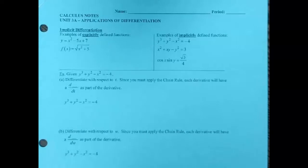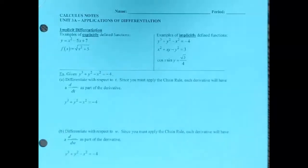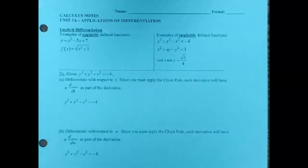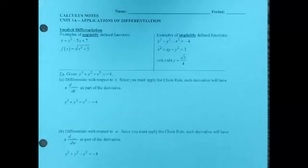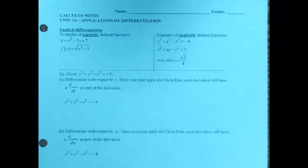The implicit stuff is weird at first, but the more you practice, hopefully the better you'll get. Really, all this comes down to is: if the variables don't match, then you need to do chain rule. That's really all you need to remember for implicit. If the variables don't match, then you need to do chain rule. Let's go through and explain what I mean by that.